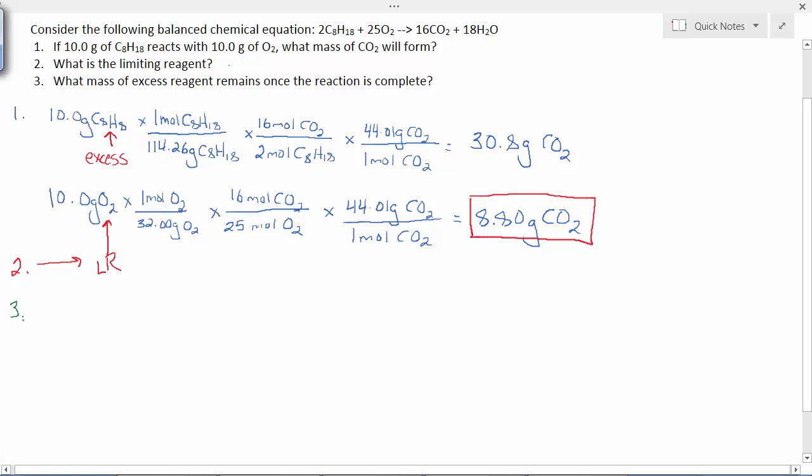How do we find out how much is left over of the excess reagent? We need to know: of the 10 grams of octane, how much did we need? To do that, let's start with the limiting reagent. The limiting reagent is oxygen - that's the one that's completely consumed.